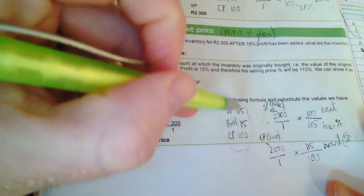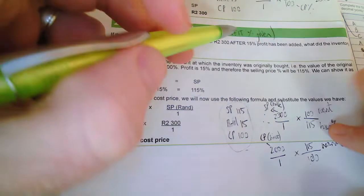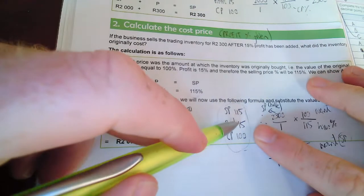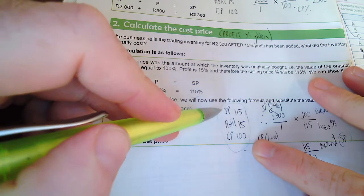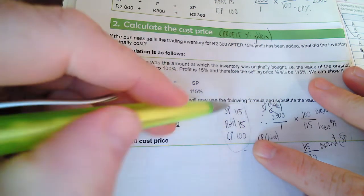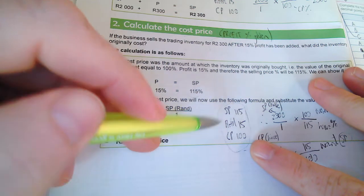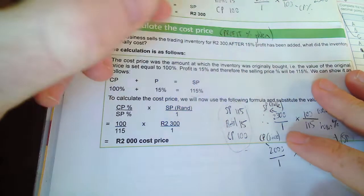Okay, so percentage is 15%. Again, cost price always will be 100%, therefore selling price will be 115%. Okay, so we start with that, then I start with what I have.